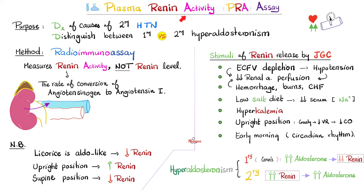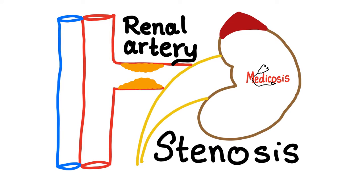In the last video we talked about the plasma renin activity assay, used to diagnose causes of secondary hypertension and to differentiate between primary hyperaldosteronism — where the problem starts in the adrenal cortex — versus secondary hyperaldosteronism. Today's topic, the renal vein renin assay, is specifically for renal artery stenosis.